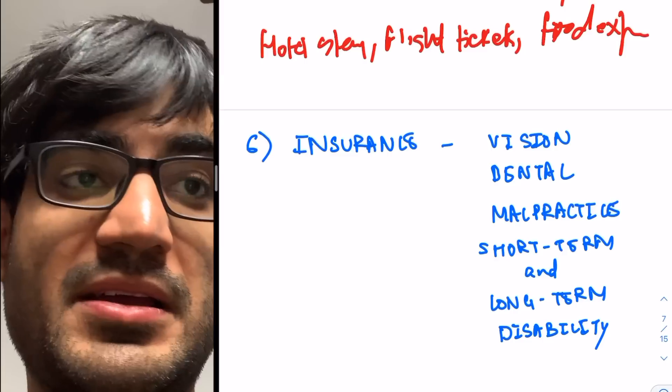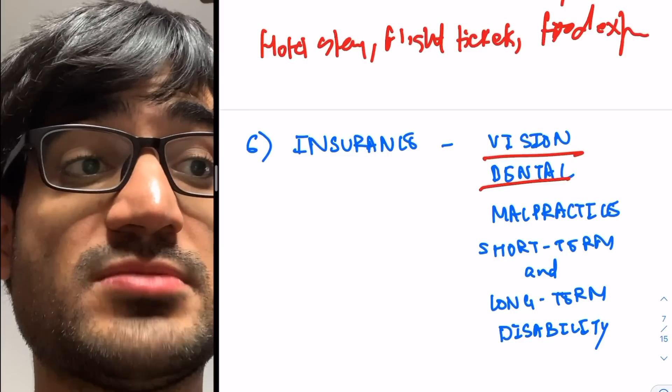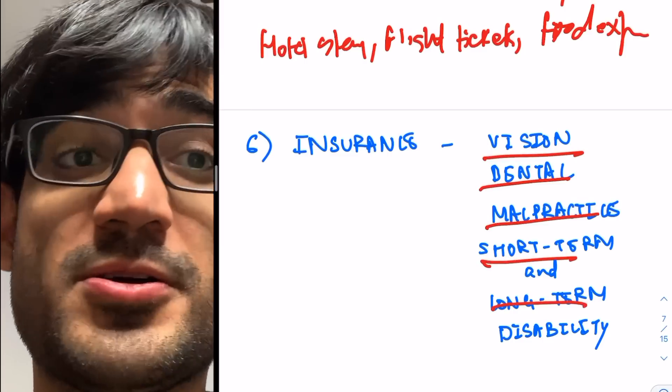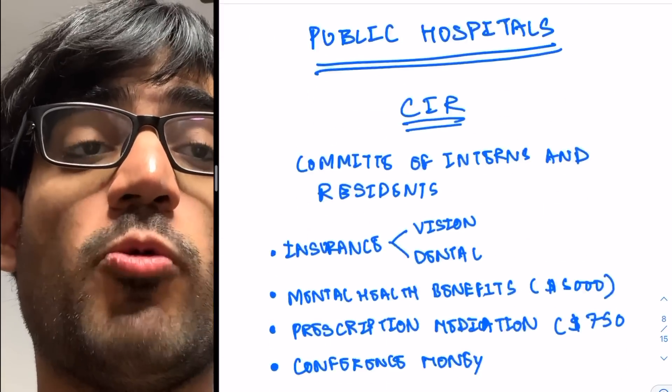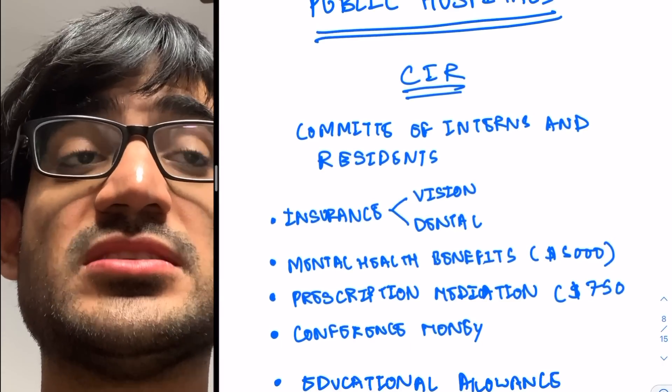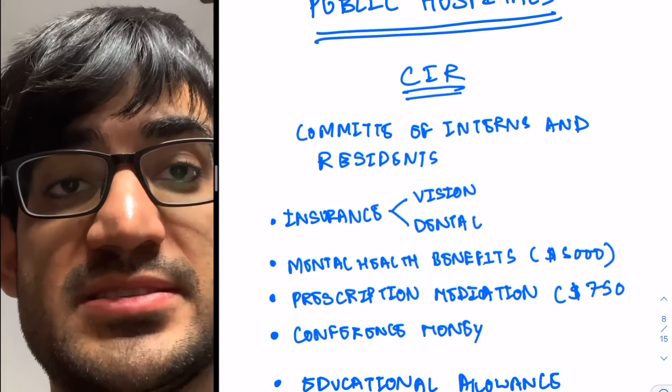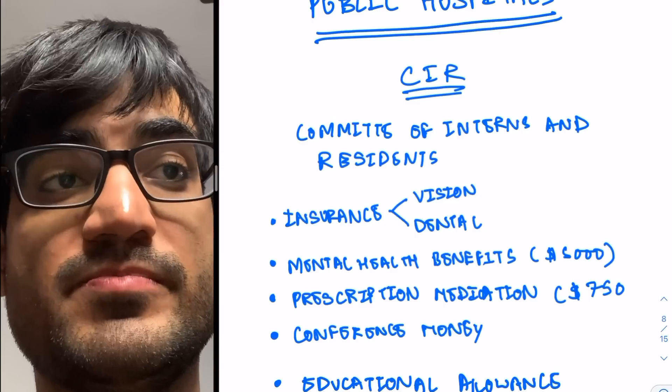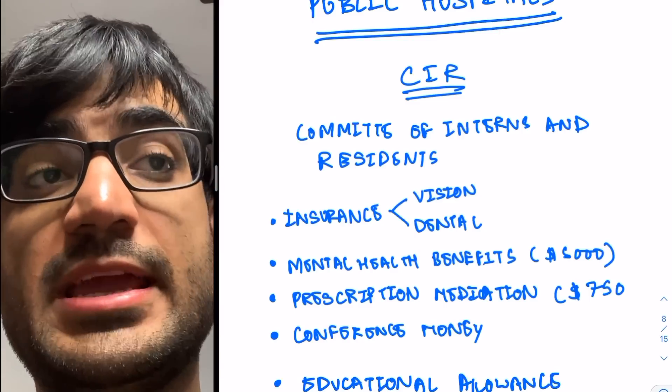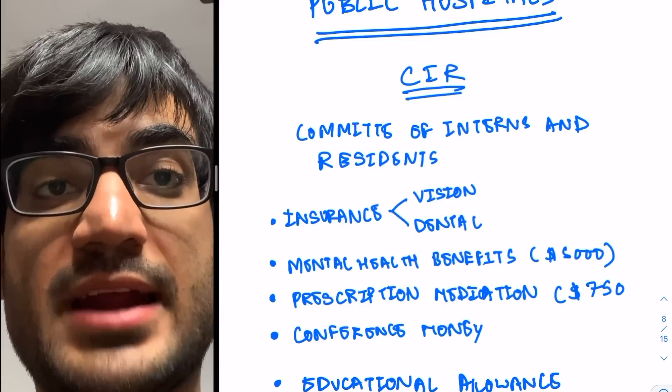Sixthly, you also get insurance, including vision, dental insurance, malpractice insurance, short-term and long-term disability insurance. What else to consider here is this thing called CIR. CIR stands for Committee of Interns and Residents. And it is a resident body which advocates for resident rights and benefits.